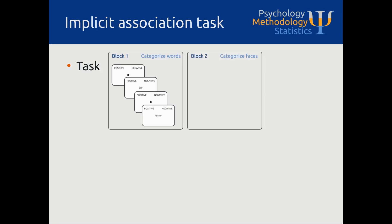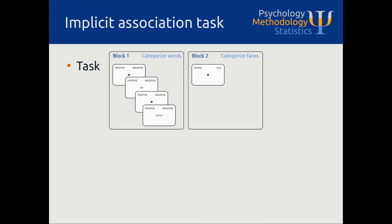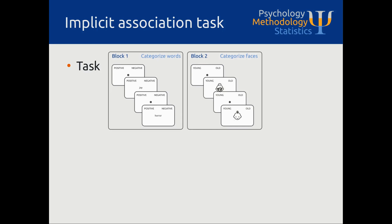Then in the second block of trials, participants have to categorize faces. They will again see two categories at the top left and right — young and old — and then at the centre a face appears. Participants have to indicate with a left or right button press to which category the face belongs.